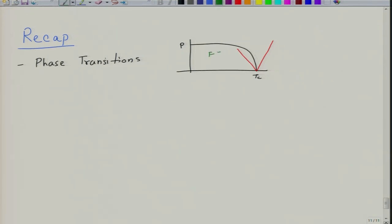This region is ferroelectric and this region is paraelectric, and this is the boundary between the two for second order. This is also manifested in the free energy: the second derivative of free energy shows a discontinuity whereas the first derivative is continuous. As a result, there is no latent heat involved in this transition.